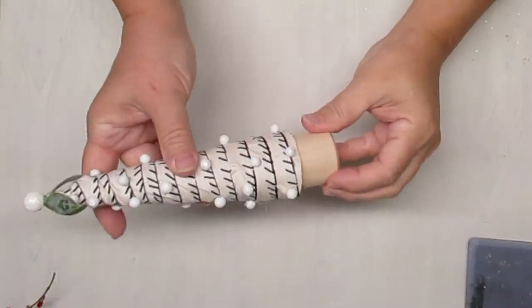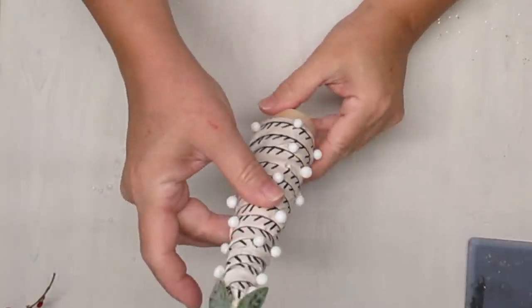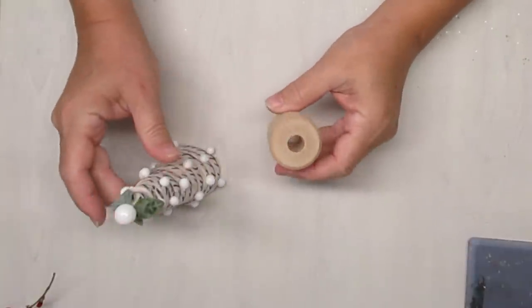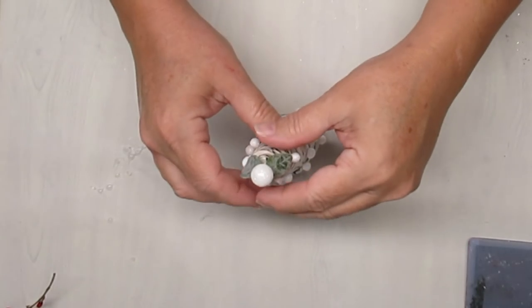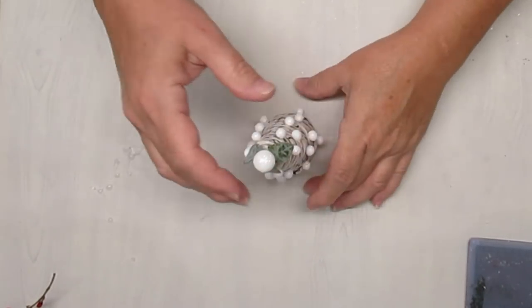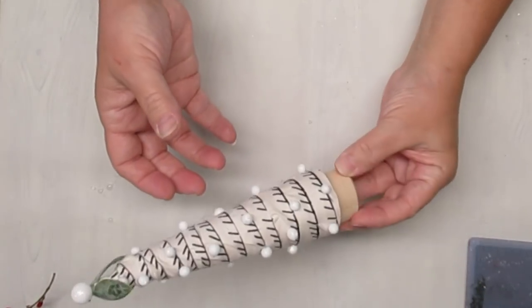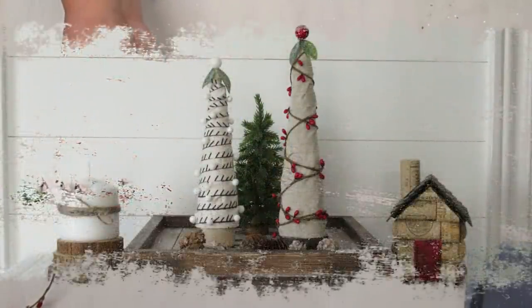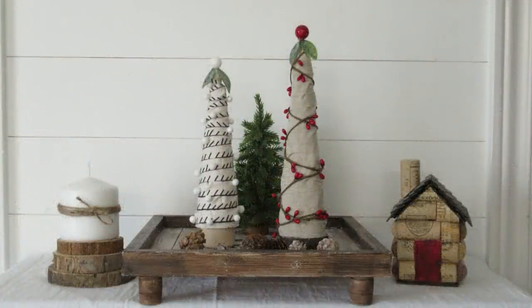I also made a second smaller tree using the striped fabric. I added some tiny little frosted berries to it, added the same three leaves and then added one more white berry to the top. I think these turned out really sweet.